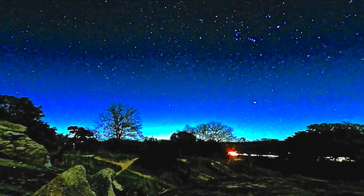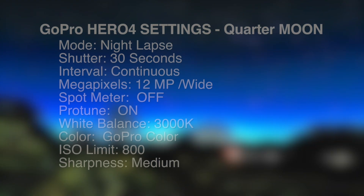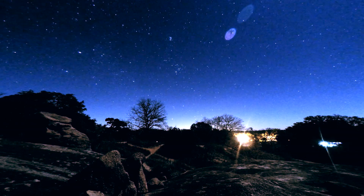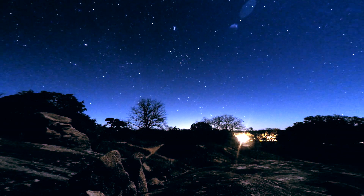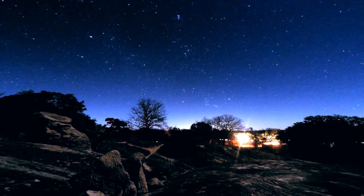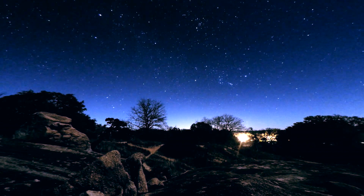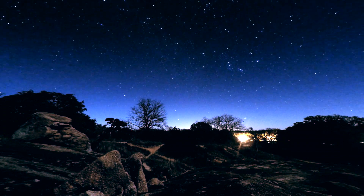The third scene shows the Enchanted Rock Campground under a bright quarter moon. The moon is not visible, but its effect on the landscape is dramatic. Notice the changing activity in the campground and the glow of a distant city.